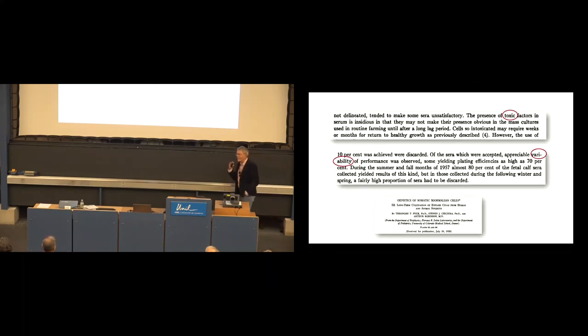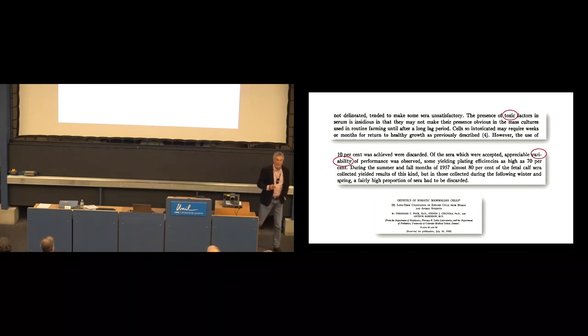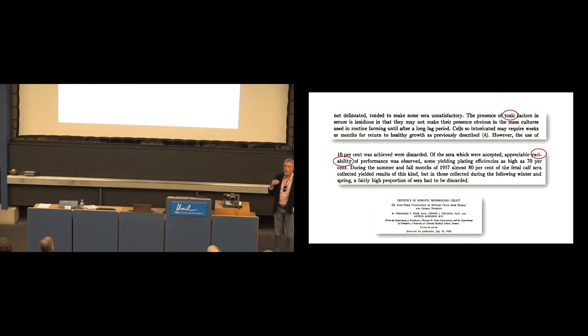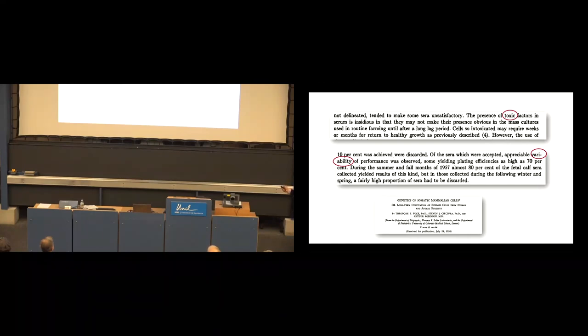And that there is a batch-to-batch difference was already known at the time that the first paper was published showing that FBS was a nice growth medium for the cells because Puck, who invented it, in the same paper already observed that there was variability of performance when serum was collected in winter or in spring and compared to the other seasons. And we now know that there are a lot of difference not only to the different seasons but also to the areas where we raise the herds.